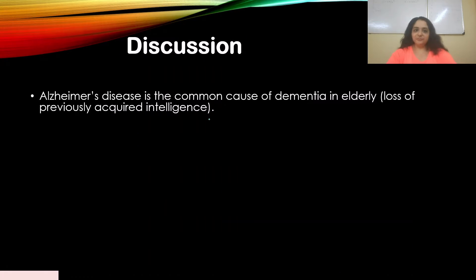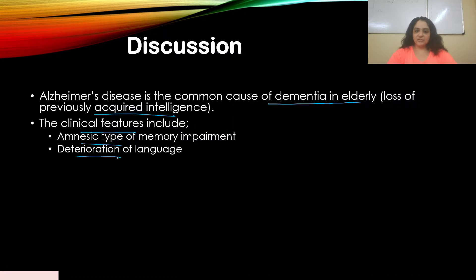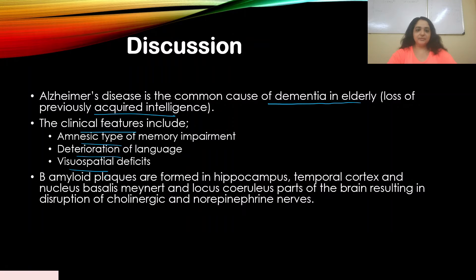Alzheimer's disease is the common cause of dementia in elderly. Dementia is the loss of previously acquired intelligence. The clinical features of Alzheimer's include amnesic type of memory impairment, deterioration of language, and visuospatial deficits.